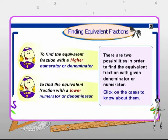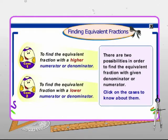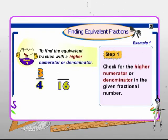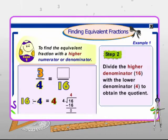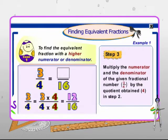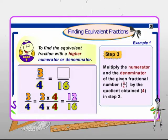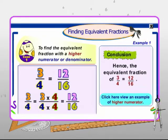There are two possibilities in order to find the equivalent fraction with a given denominator or numerator. Let's take them one by one. Case one: to find the equivalent fraction with a higher numerator or denominator. In step one, check for the higher numerator or denominator in the given fractional number. In step two, divide the higher denominator, that is 16, with the lower denominator, that is 4, to obtain the quotient — here 4 is the quotient. In step three, multiply the numerator and the denominator of the given fractional number, 3 upon 4, by the quotient obtained, that is 4. Hence the equivalent fraction of 3 by 4 is 12 by 16.